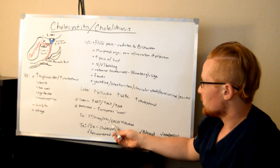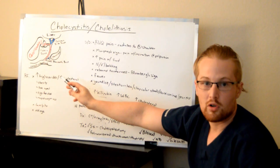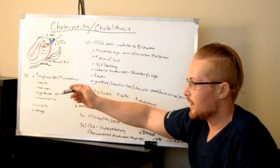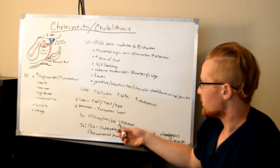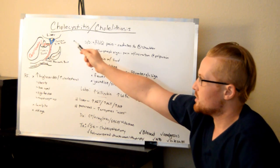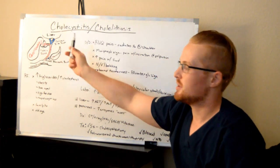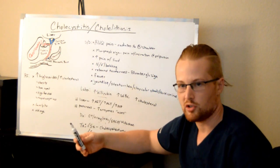They can also use something called an ERCP, which is they'll endoscopically go in and they'll look for any stones or blockages. And at this point, they could remove the stones if they find them. Or a HIDA scan, which is another specific scan for the biliary system, which is these three: the liver, gallbladder, and pancreas, to see if they can find any stones or blockages or tumors.